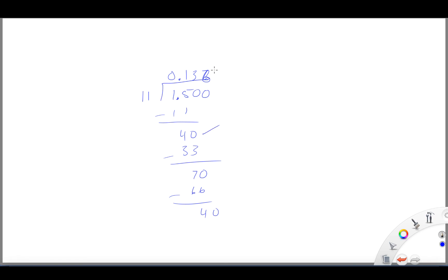And you'll notice that we're going to repeat right here, because 40, and we go 3, which is 33, 7, and then we're going to go 6, so it's 0.1363636, the 3, 6 repeat, and we can round that.